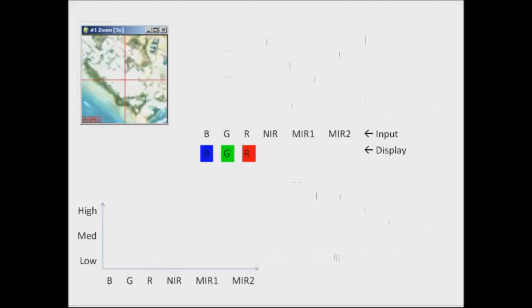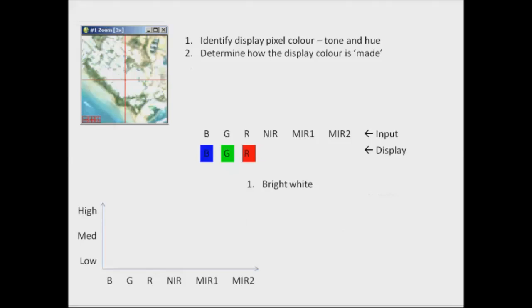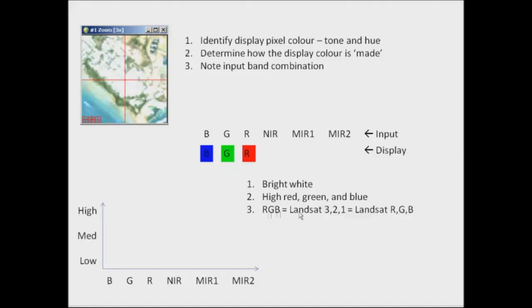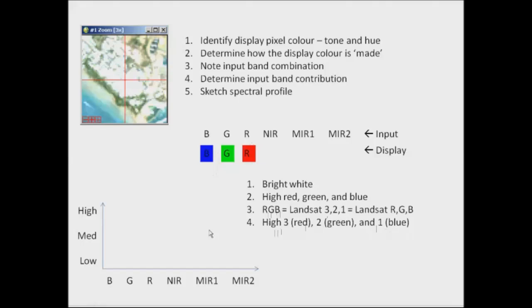Let's go through another example quite quickly. This is a pixel that I've picked out, and we go through the exact same process. We identify the pixel colour and this time we're saying it's bright white — the two components being tone and hue. From the practical last week you should have observed that white is made out of an equal contribution of all three red, green and blue combinations, and because it's bright it must have high levels of all three. The input band combination is bands 3, 2, 1 being displayed as red, green and blue — just the same as the previous example. The band contribution therefore would be high in bands 3, 2 and 1.